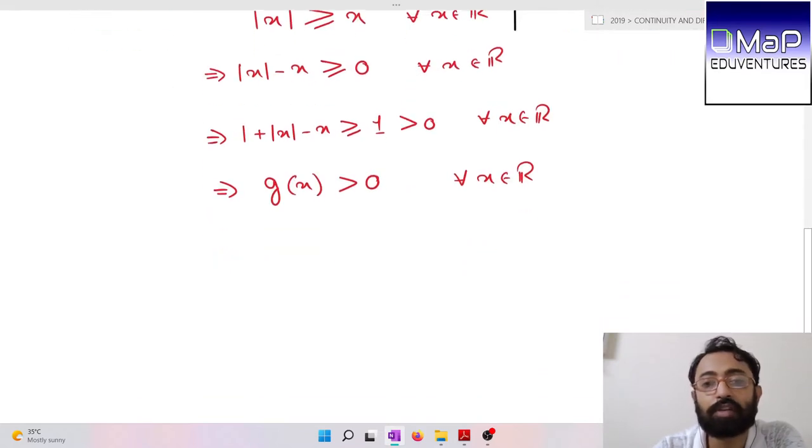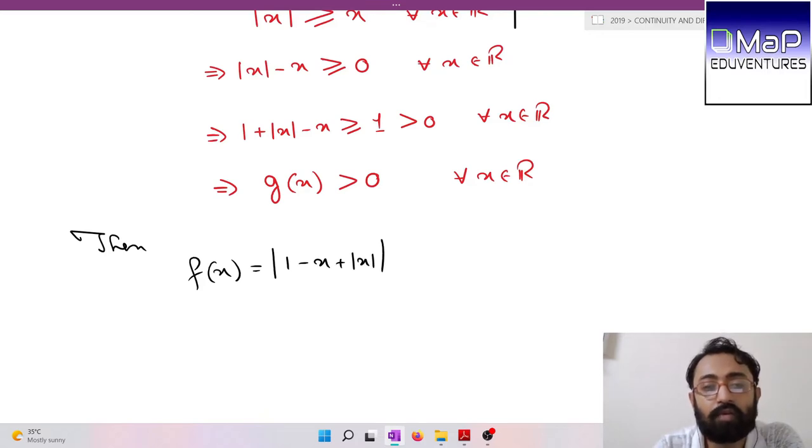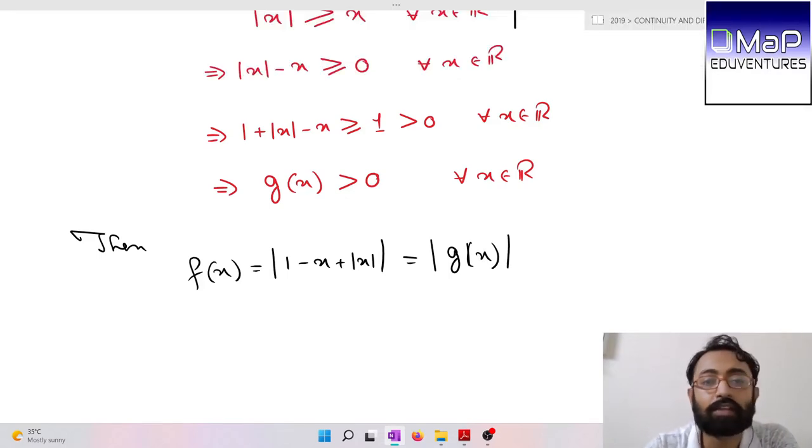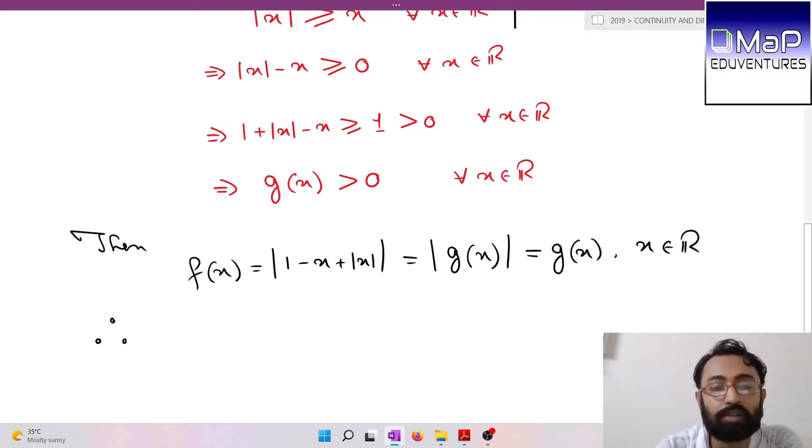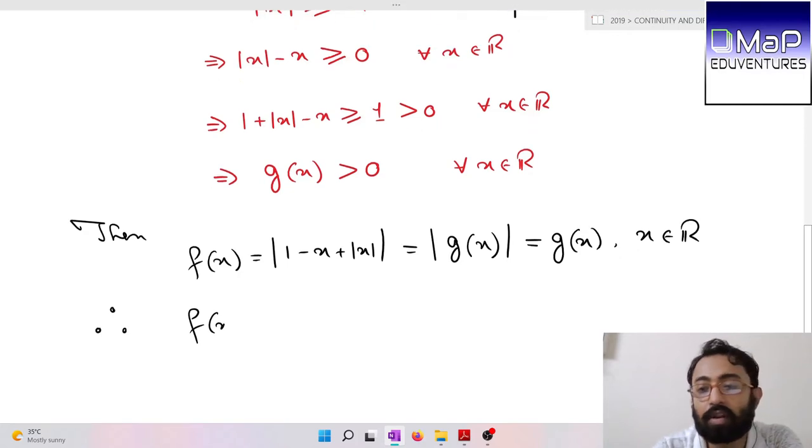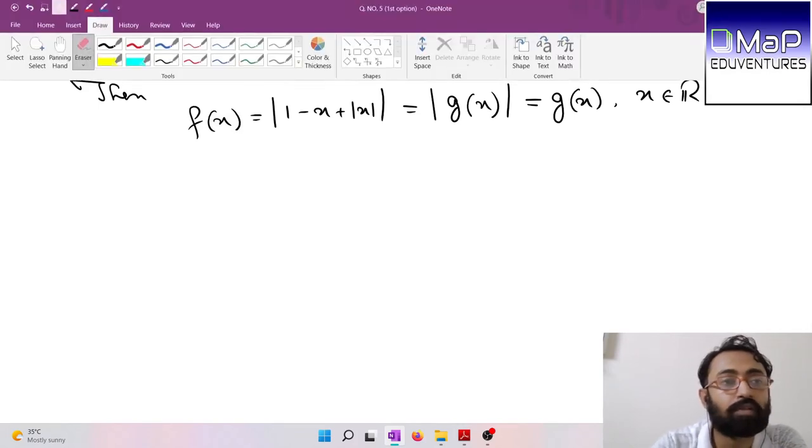So the function g(x) is actually a positive function for all x belongs to real number. Therefore g(x) will be positive.